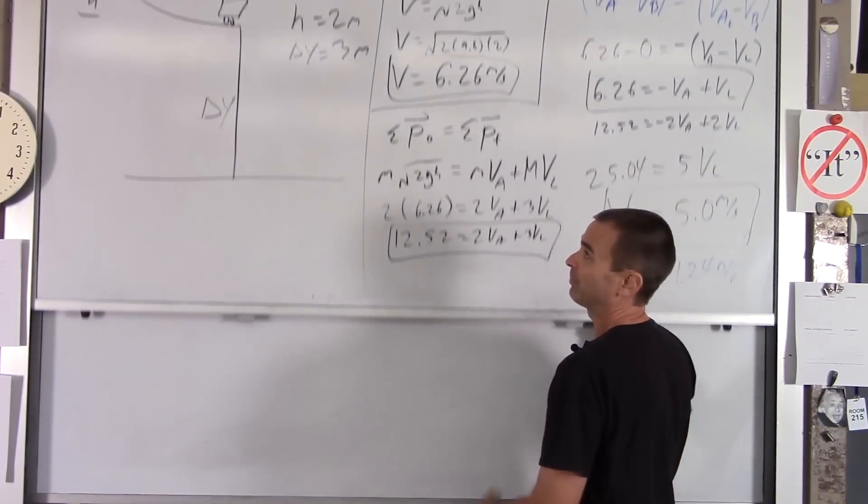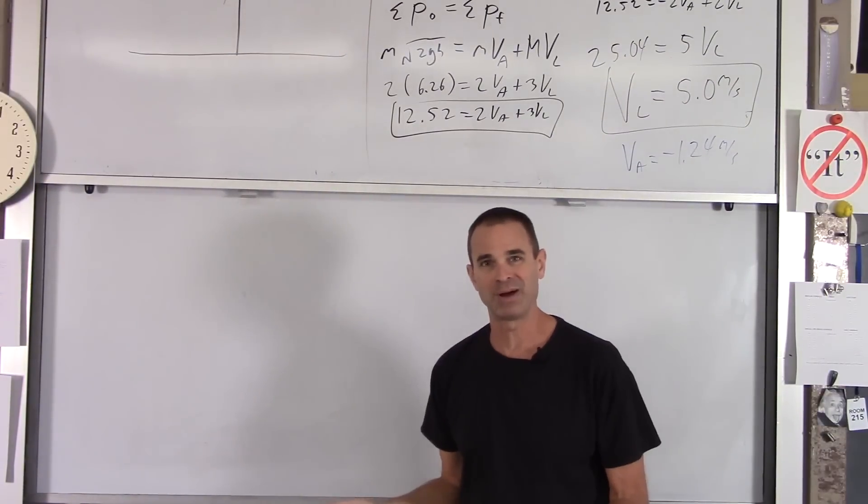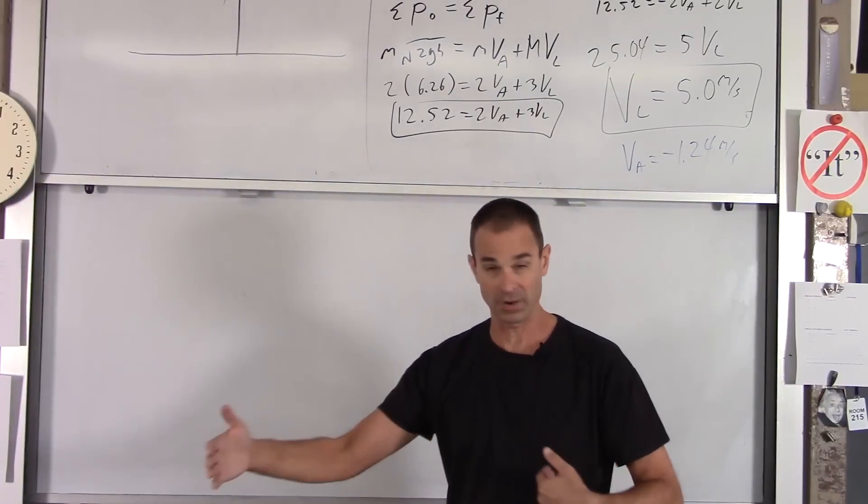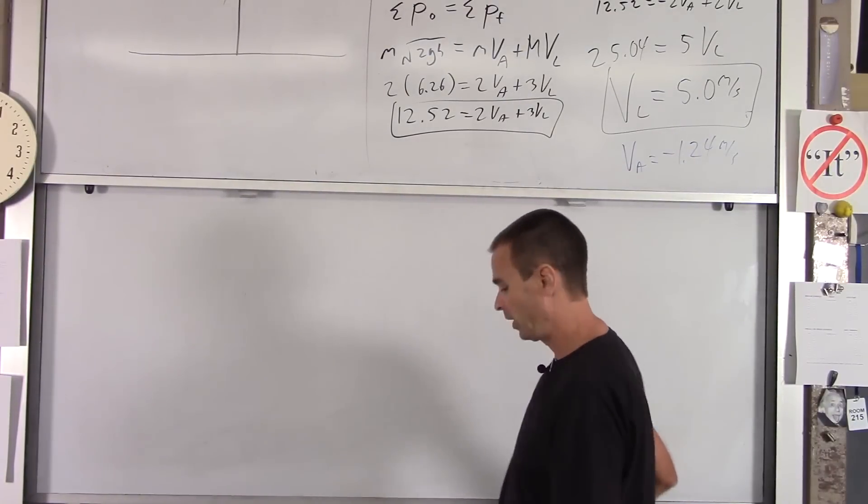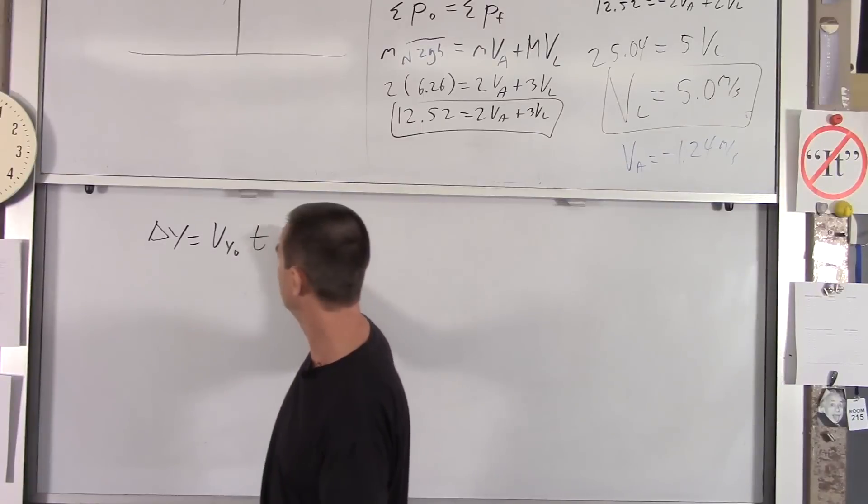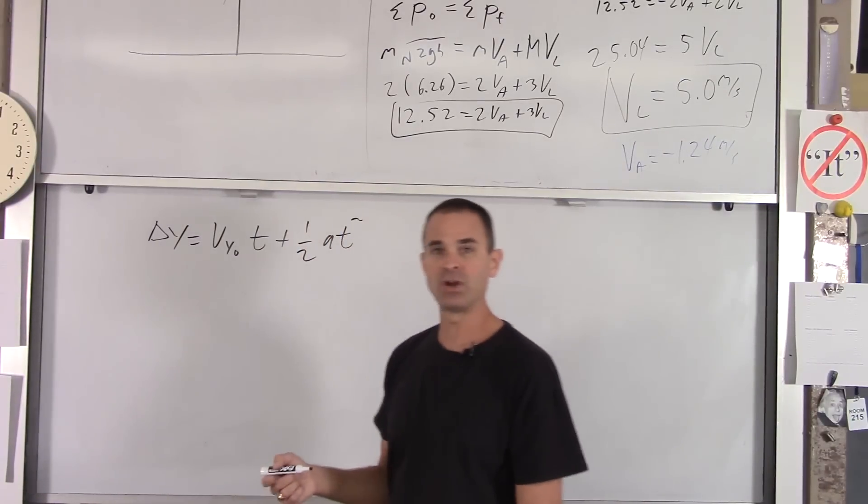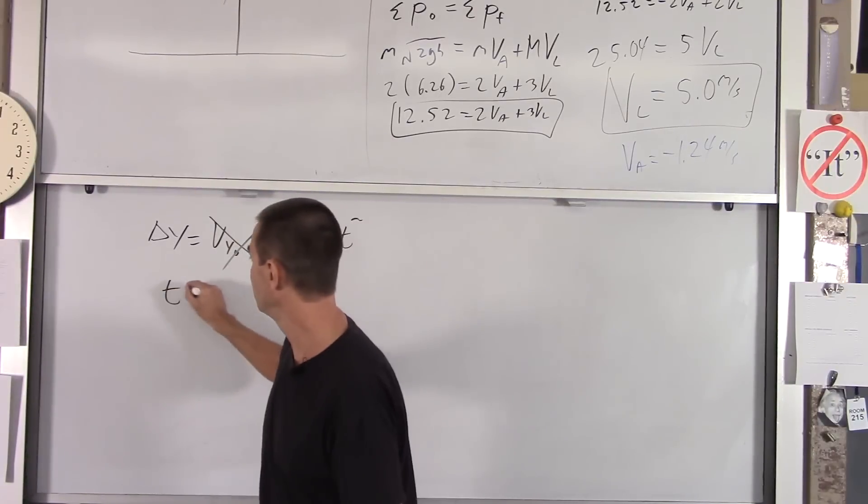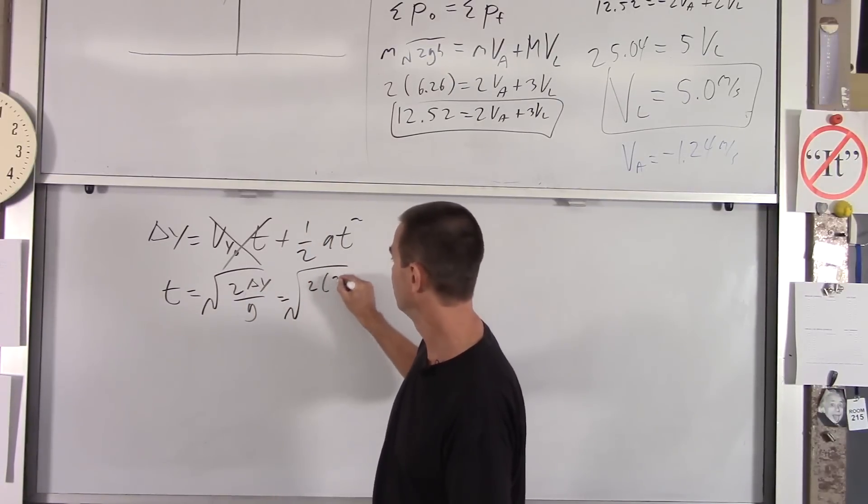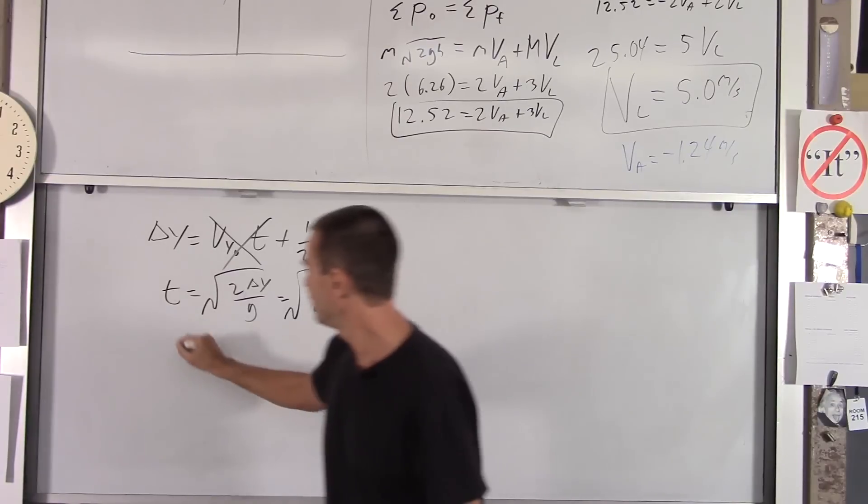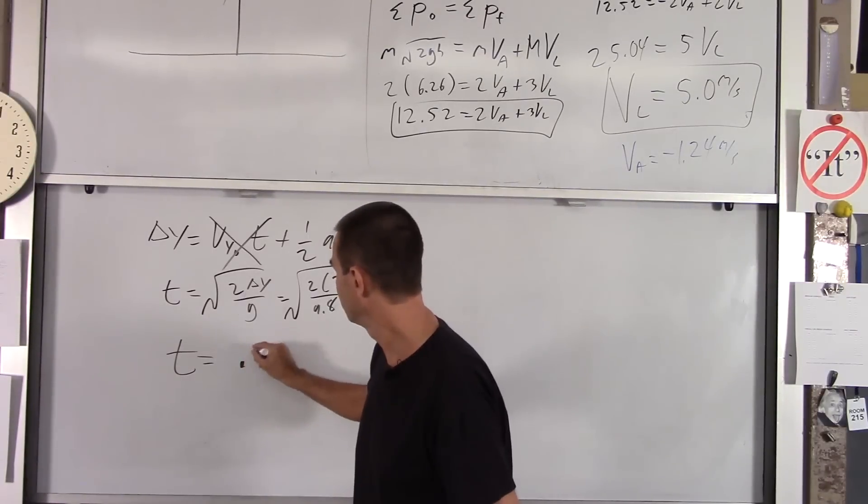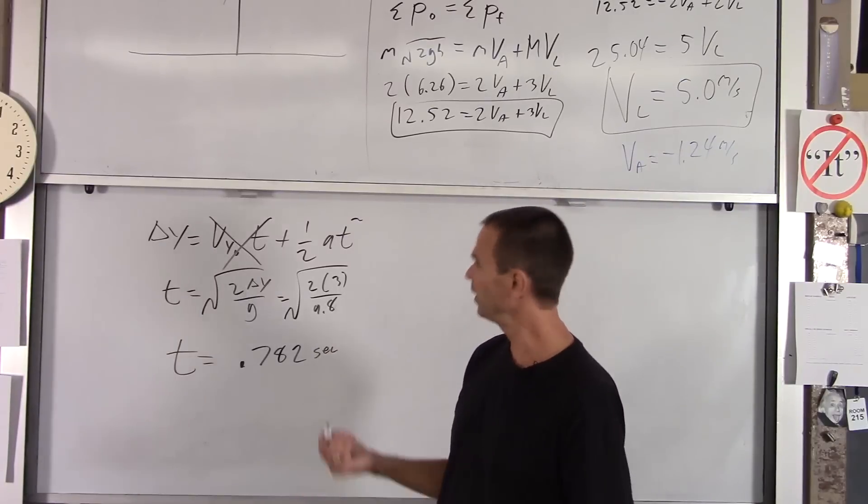Now, once we've got that, the rest of the problem is pretty easy because now it's a projectile motion problem. So now you've got one object moving. You really can't use conservation of energy because you've got to know something about where he's landing. So we use kinematics. So we can look at the vertical direction and we know that delta y equals Vy not t plus 1 half a t squared. Since he's launching horizontally, we know Vy not is zero. You get t is root 2 delta y over a is g in this case. So you got root 2 times 3 over 9.8. If you plug and chug in your calculator, you should get a time of 0.782 seconds. So it's in the air for about three quarters of a second.